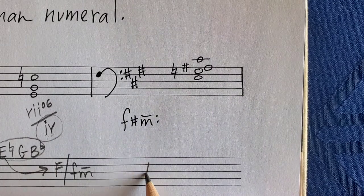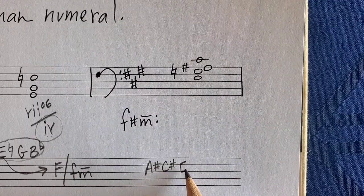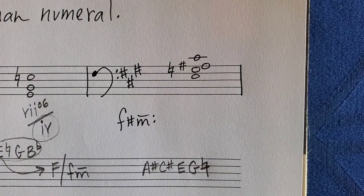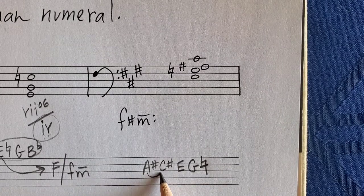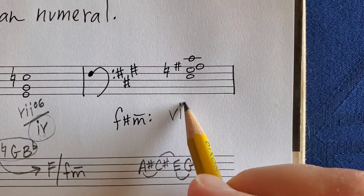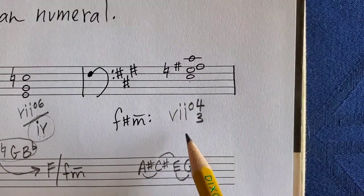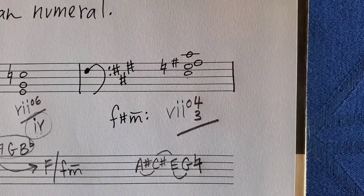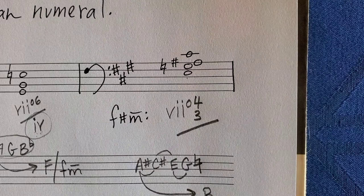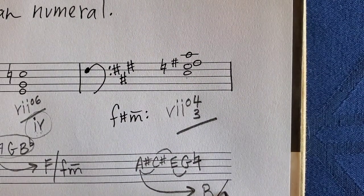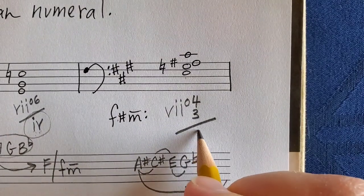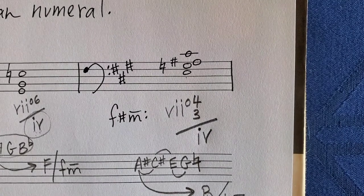Next chord: root is A#, so A#, C#, E, G natural. Notice the G natural and A# — the chord is fully diminished (minor third, minor third, minor third). It's in 4/3 position with the fifth in the bass. Where does A# lead? A# leads to B. In the key of F#, B is IV. Minor key, so IV is minor: viio4/3/iv.